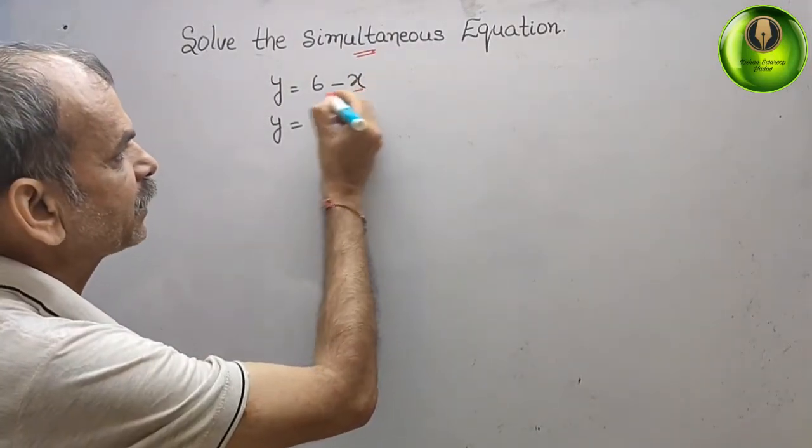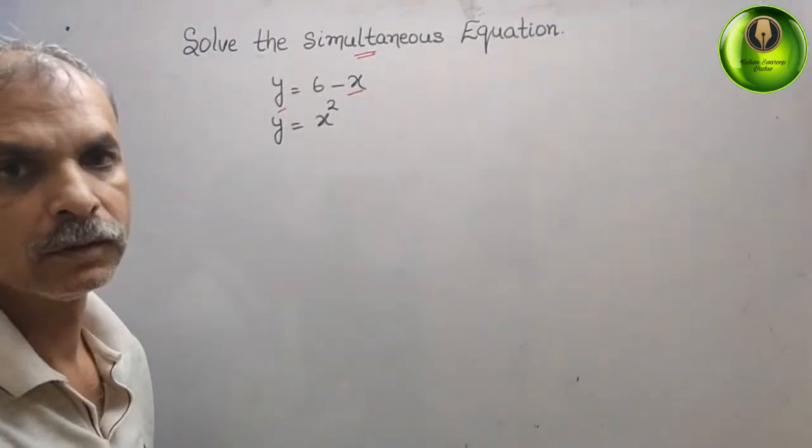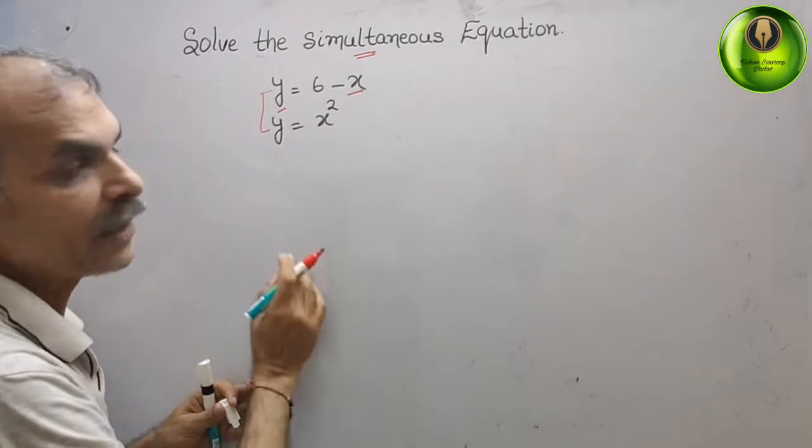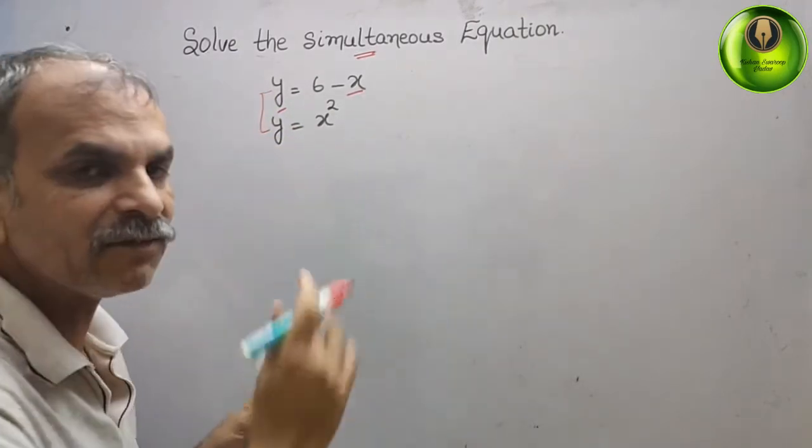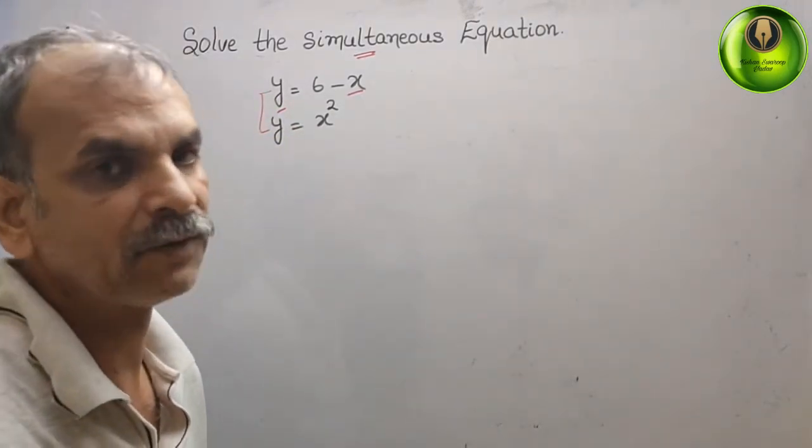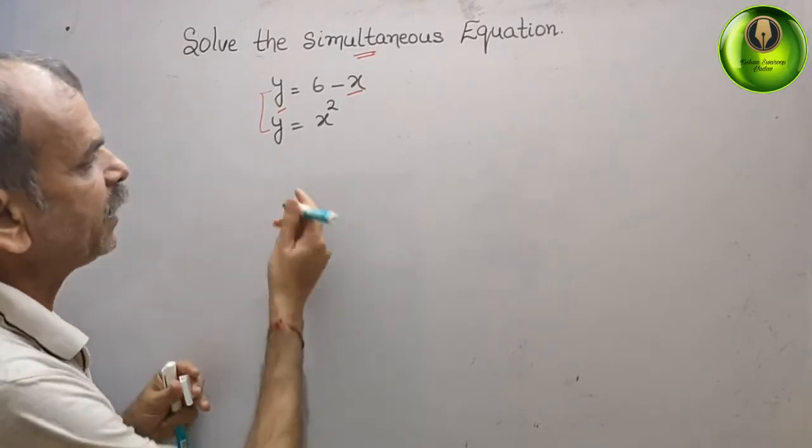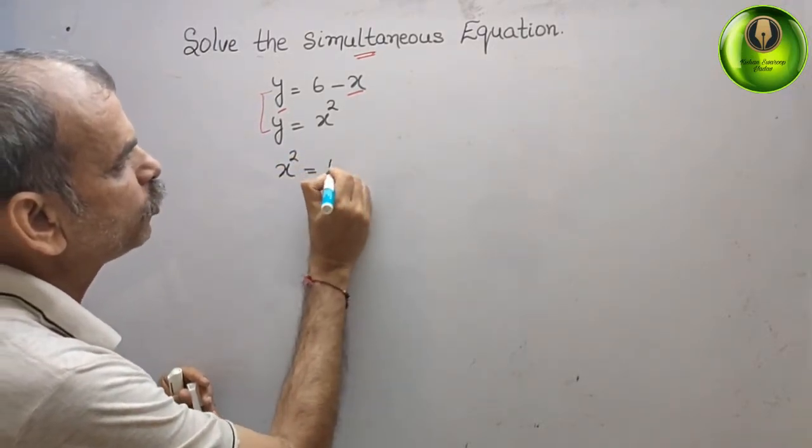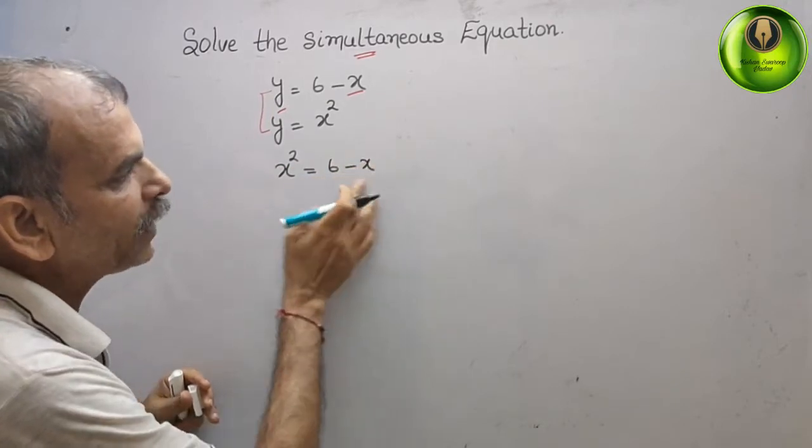Here if you see both are y, that means right side equations are equal. We will write x square = 6 minus x. Bring this to left side, we will get x square + x - 6 = 0.